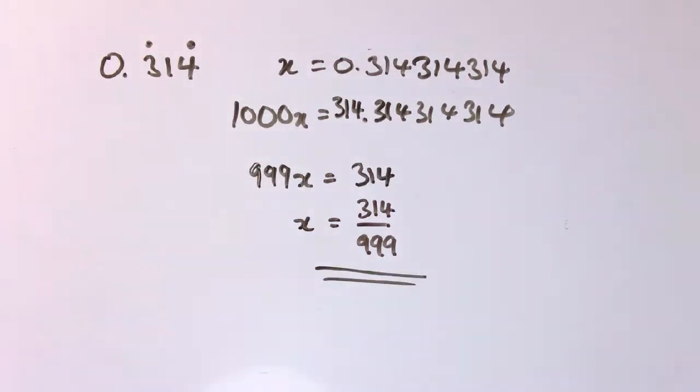I'll get 1000x, and this is 314.314314... etc. Subtract one from the other to leave 999x. This bit cancels out so I've got 314, so x equals 314 over 999. That one actually doesn't cancel down at all, so that's our final answer. We could do something similarly if you had something like 31.25314 recurring.